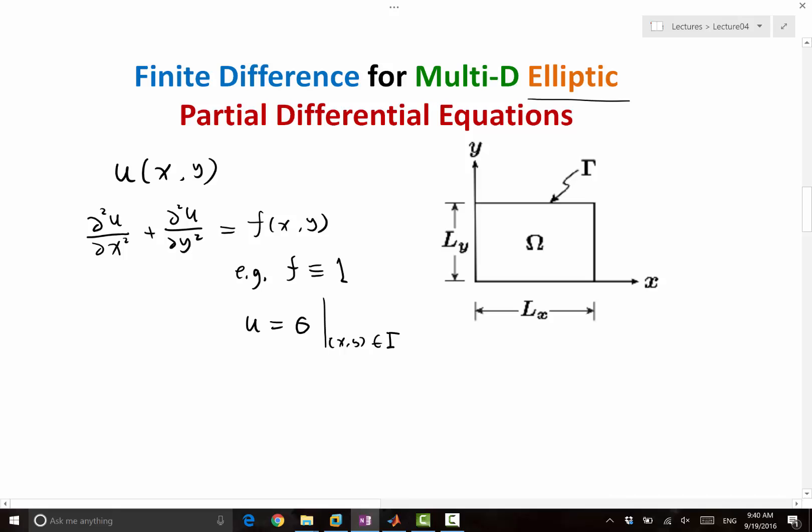So remember in 1D, we discretize the function by storing only which part of the function. The value of the function on the grid points, right? In 2D, we do the same. And the most commonly used type of grid points are what we call Cartesian grid.